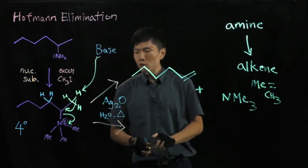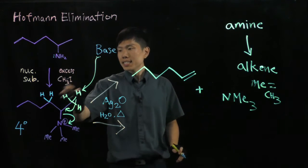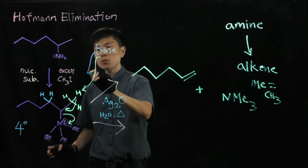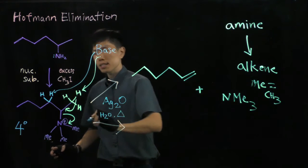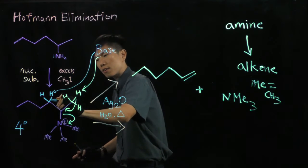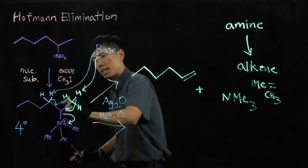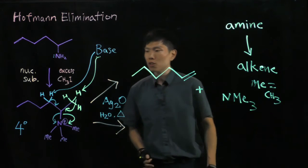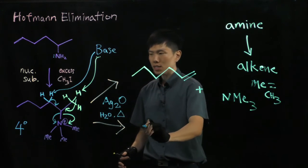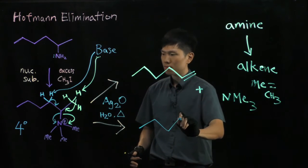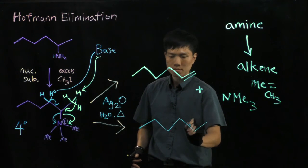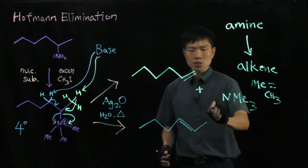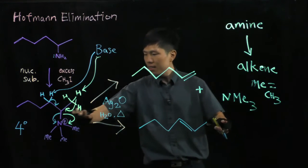Now suppose we take the base and attack the blue hydrogen. Following the trail of the blue, this bond will break, forming the pi bond here, and again cut loose this part, reforming the neutral nitrogen. What we have here is a double bond.